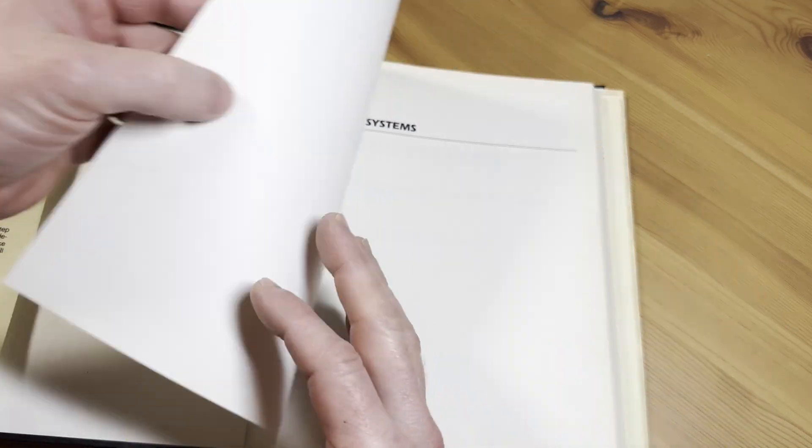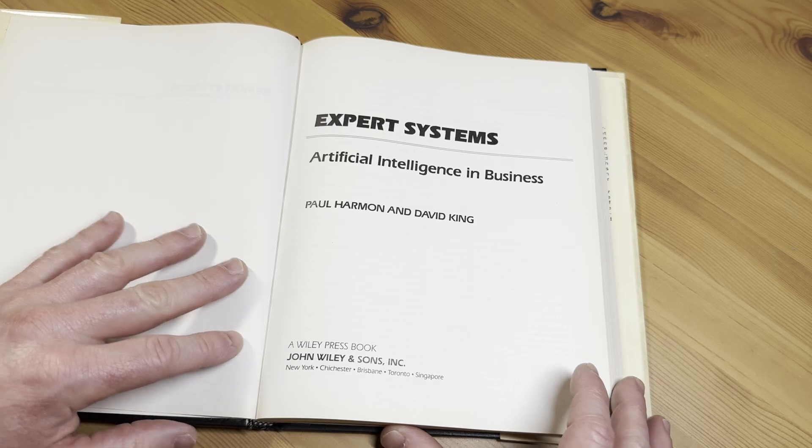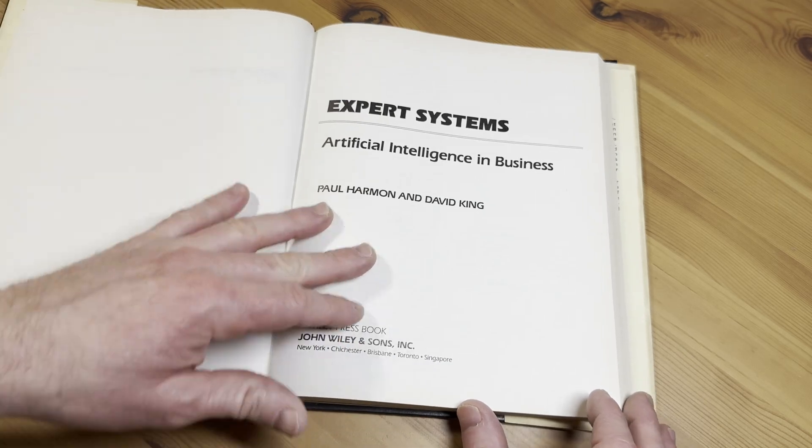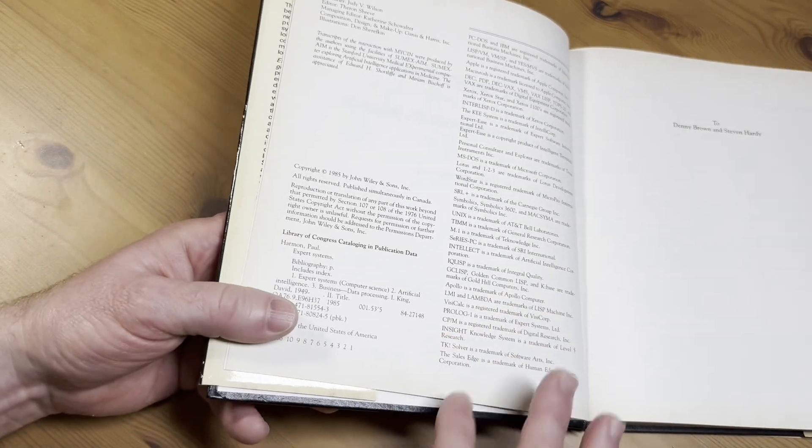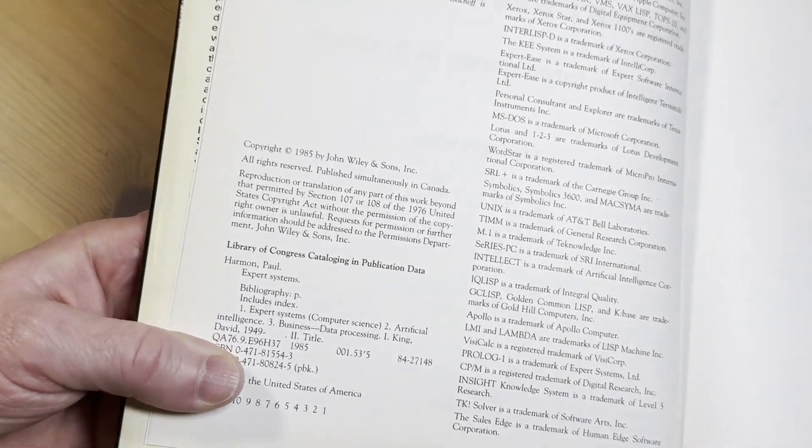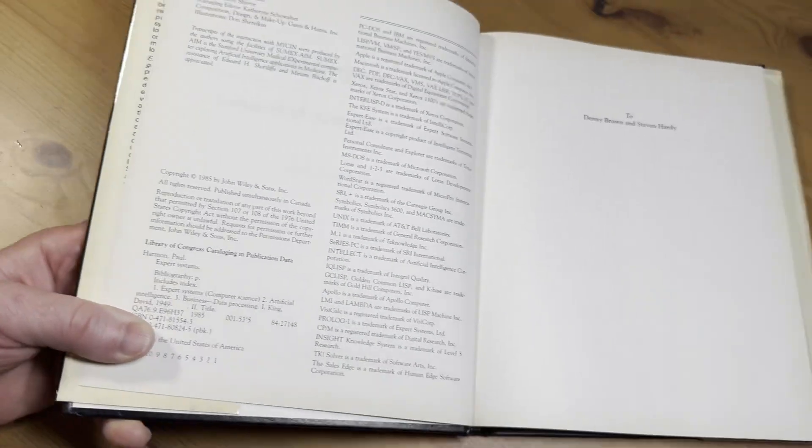Let's turn the page here. Expert Systems. Artificial Intelligence and Business. Paul Harmon and David King. And I said this is an older book. It is. I believe this is the first edition. It might be the only one. I don't know. 1985. That's quite a long time ago.